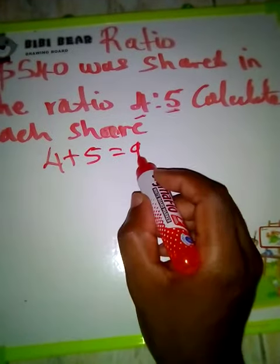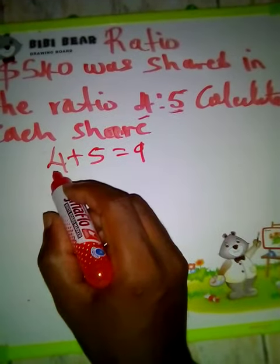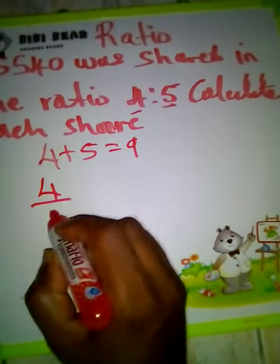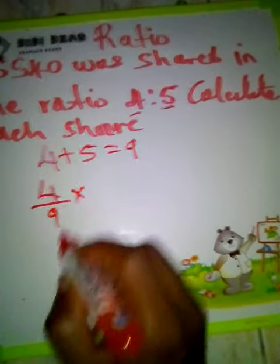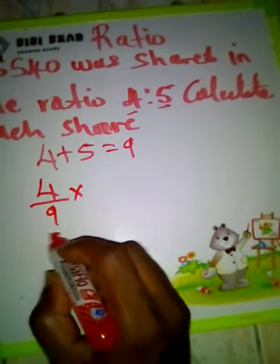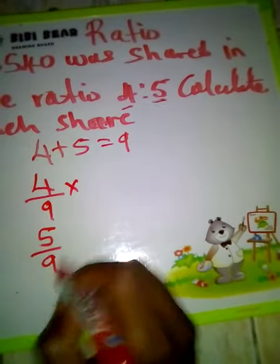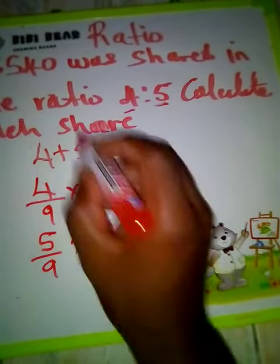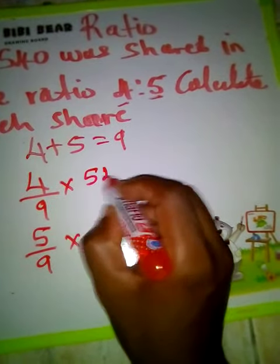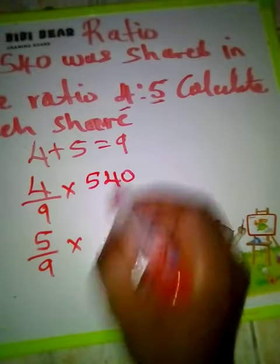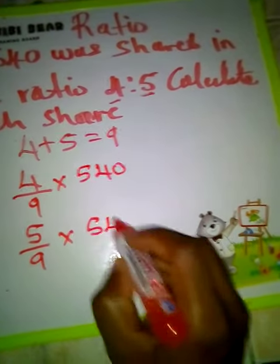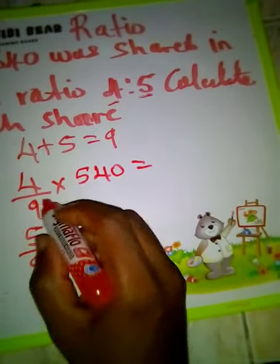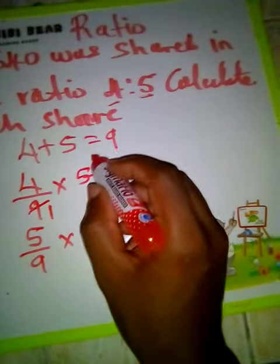Out of these 9 total shares, the smaller share gets 4 out of 9, and the larger share gets 5 out of 9. We then multiply each fraction by 540 to find each person's amount.